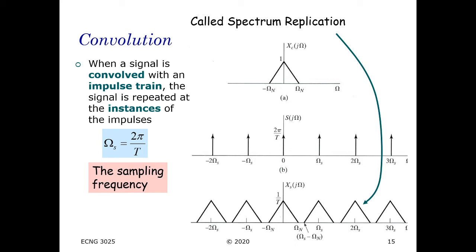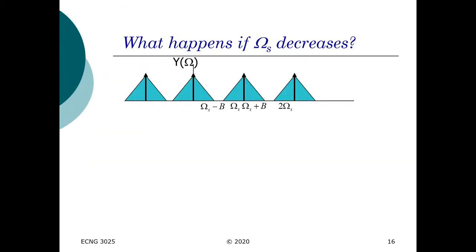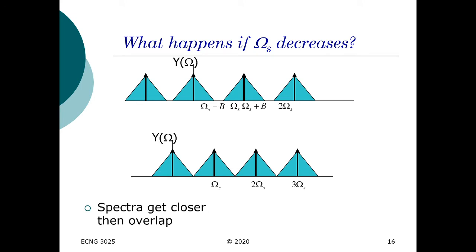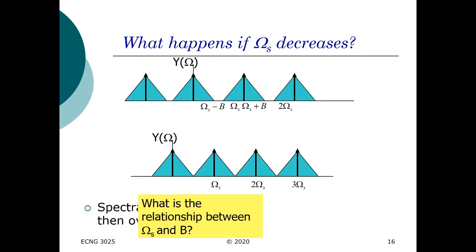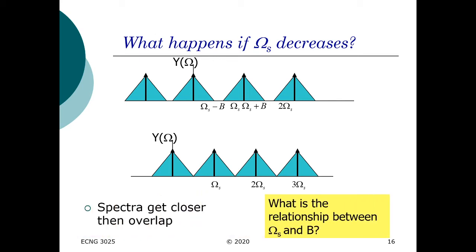This effect can be changed if we start modifying the sampling frequency. If ω_s decreases, the spacing between each one of these spectrums we observe is going to get closer — the spacing decreases. As the spacing decreases, we need to observe what the relationship is between the sampling frequency and the sideband B.